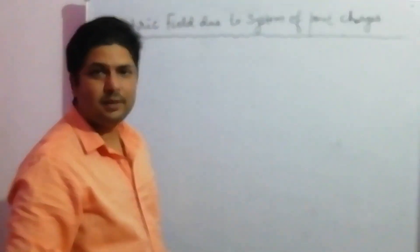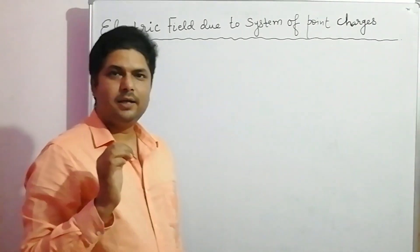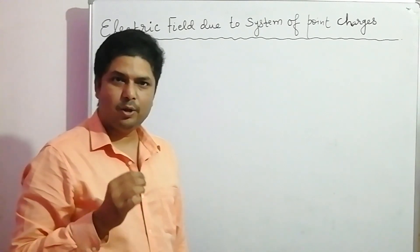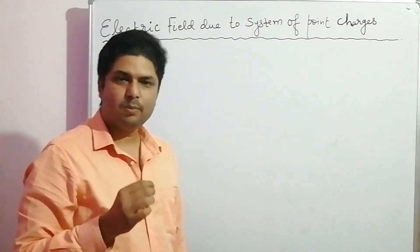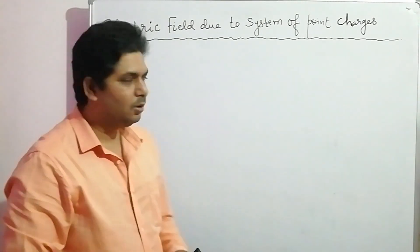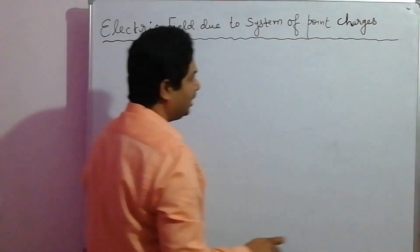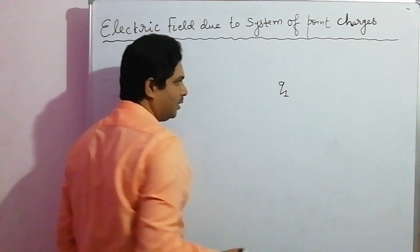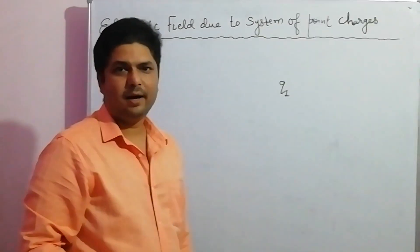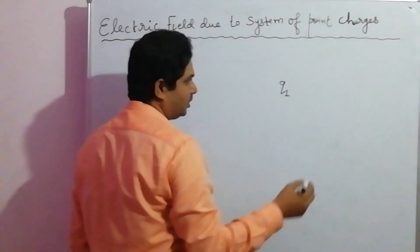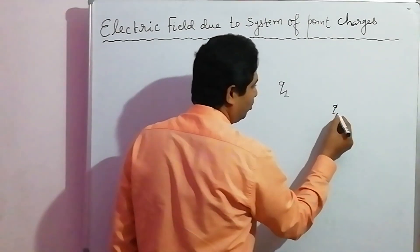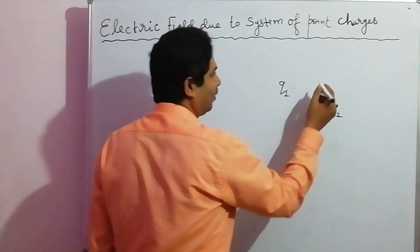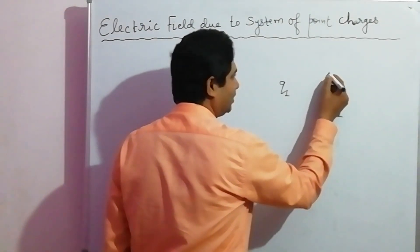This means that when there is more than one charge, what is the electric field due to this system of charges? Suppose you have a charge Q1 here and another charge Q2 here, and suppose you want to know what is the electric field at this point.